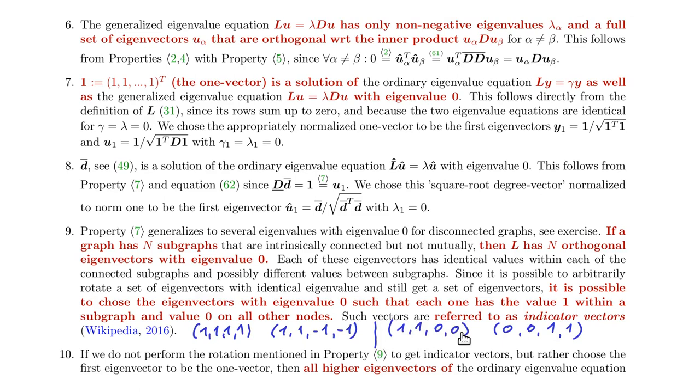If you want to maintain this property of zero mean for most of the vectors, so for all vectors except for the first one, you would have to choose this set of eigenvectors.